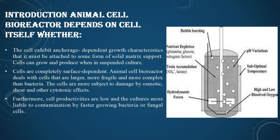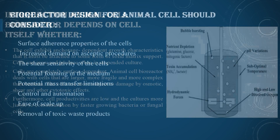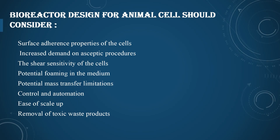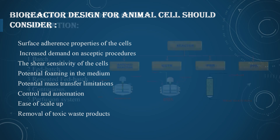Cell productivity is low and the culture is more liable to contamination by faster-growing bacteria or fungal cells. Bioreactor design for animal cells should consider: surface adherence properties of the cell, increased demand on aseptic production, shear sensitivity of the cells, potential foaming in the medium, potential mass transfer limitations, control and automation, ease of scale-up, and removal of toxic products.